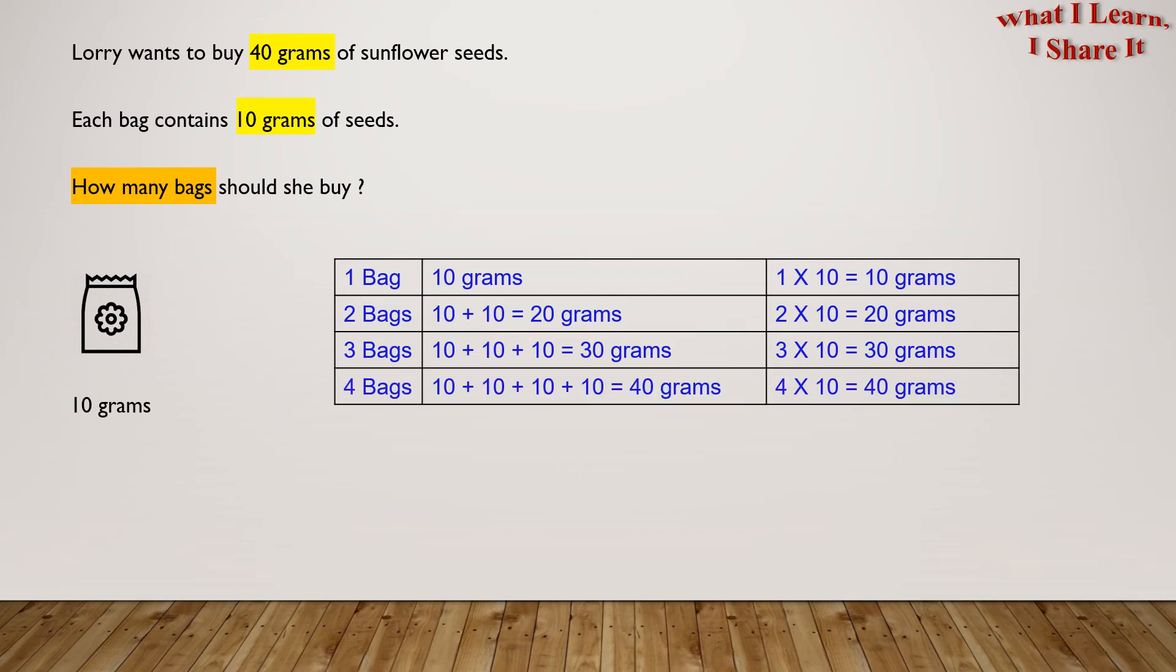So let's add another bag. 4 bags equals 10 plus 10 plus 10 plus 10 equals 40 grams, which equals 4 times 10 equals 40 grams. Yes, this much is enough. So Lori should buy 4 bags.